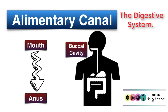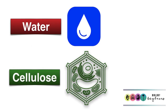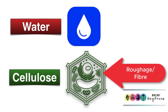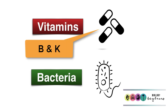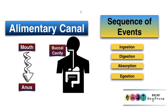The alimentary canal basically begins at the mouth and ends with the anus. Remember, buccal cavity is another way of referring to the mouth. This is a very detailed chapter on your course, so make sure you can talk about how carbohydrates, proteins, and lipids are digested, the reabsorption of water, the importance of cellulose in the diet, and also vitamins B and K and the symbiotic bacteria found in the colon.